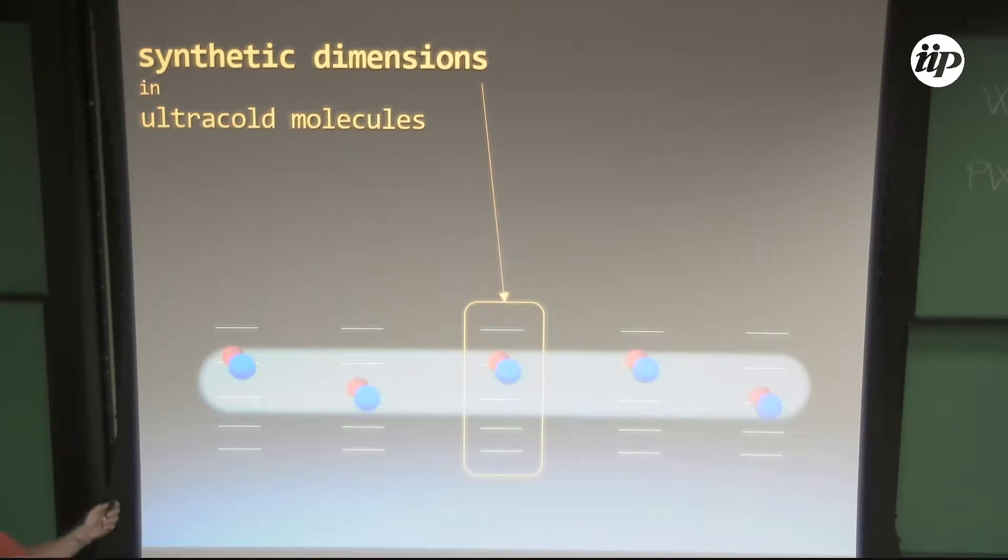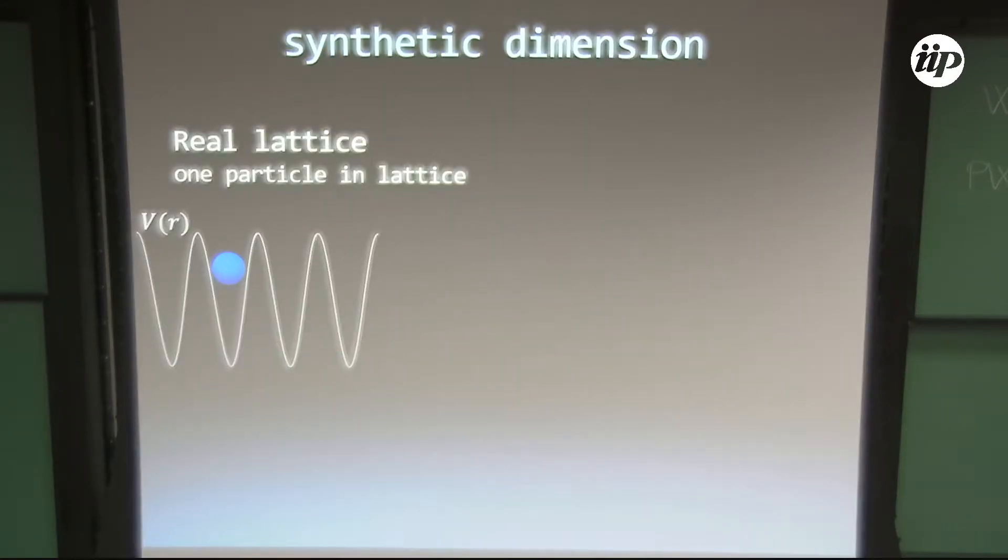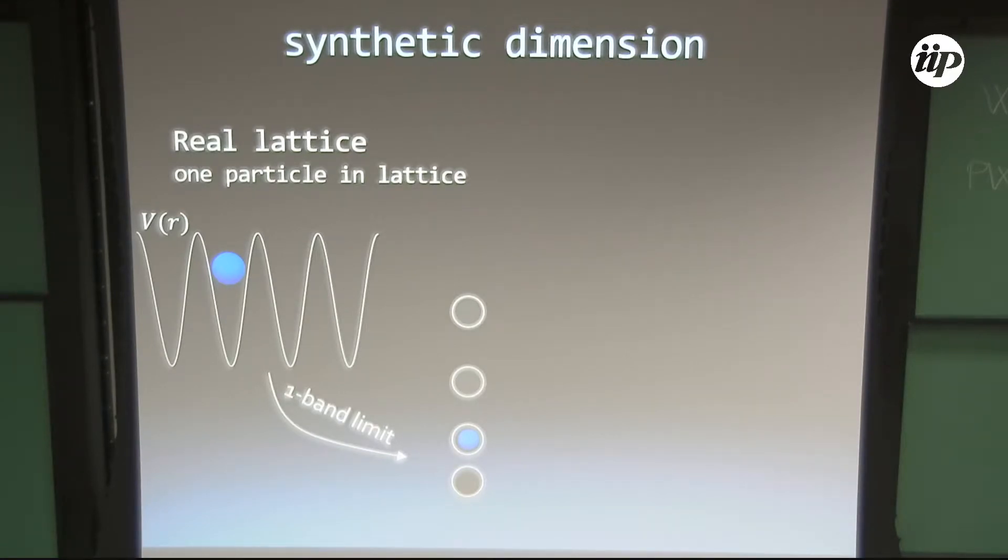The other part I have to explain is what a synthetic dimension is. And so this is a real dimension, in particular in a lattice. So if I have a particle moving in one dimension, it moves in some periodic potential. The mapping, the synthetic dimension, is nothing more than saying, well, molecules can rotate. They can have some angular momentum. So one molecule has many different angular momentum states.